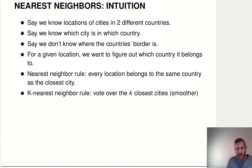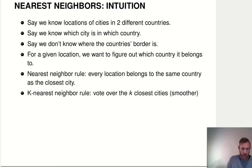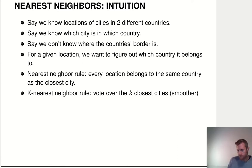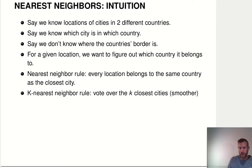You can extend this and make it a little bit more complicated by saying I'm not just looking at the one city that is closest to the location I want to classify. I'm looking also at the second, third, and fourth closest neighbors — I'm looking at K of them, the K closest neighbors. I'm basically taking a vote: if three of the five closest neighbors are country A, then I assume that this location is country A. That's the idea of K nearest neighbor.